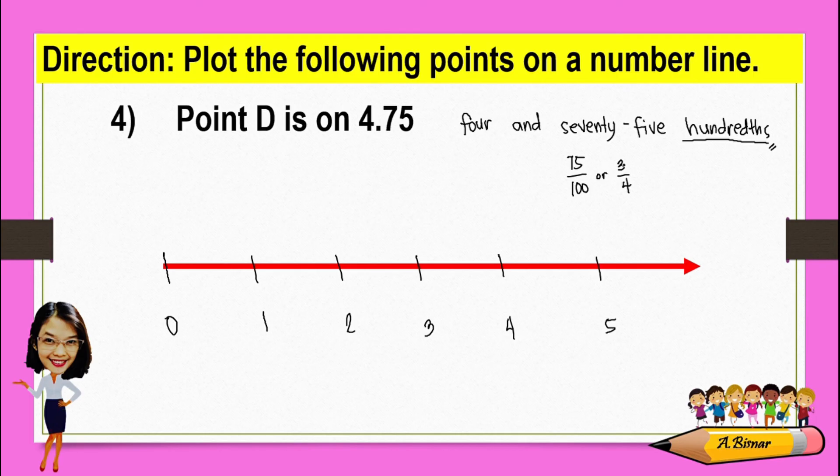Since it's already in lowest form, we can divide this into 4 equal parts. From here, this will be 4 and 1/4, 4 and 2/4, 4 and 3/4, and 4 and 4/4 or 5.